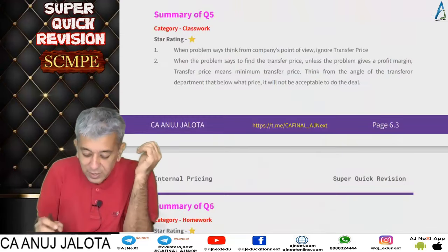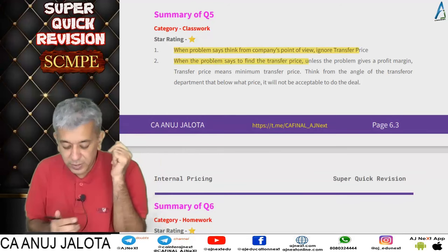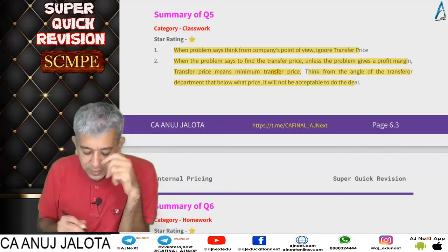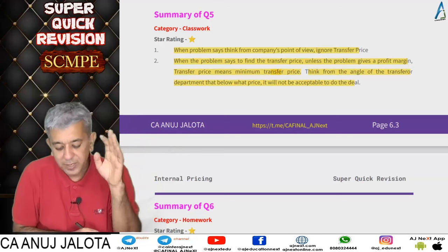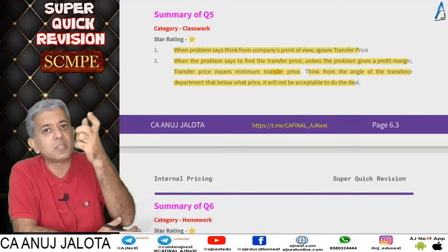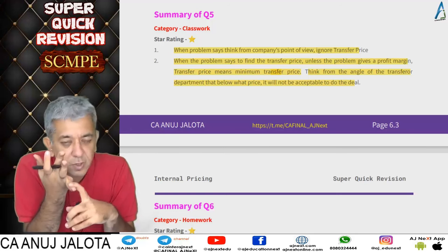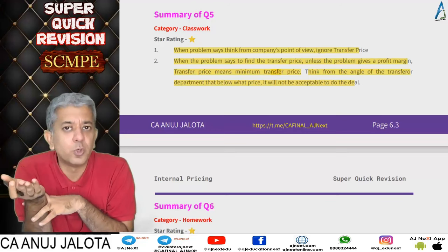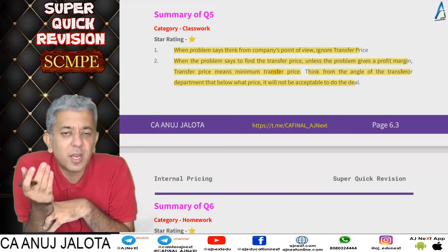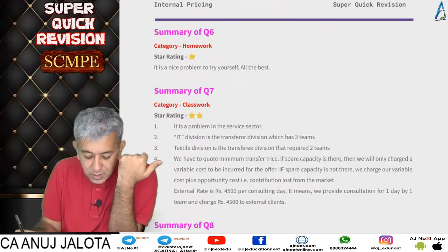When the problem says to think from the company's point of view, ignore transfer price. When the problem says to find out the transfer price, unless a profit margin is given, transfer price means minimum transfer price — think from the angle of the transferring department, below what price it will not accept the deal. Minimum transfer price always includes: variable cost of the transfer department + any specific fixed cost + any opportunity cost. Opportunity cost only comes when you were busy and could not sell in the market.